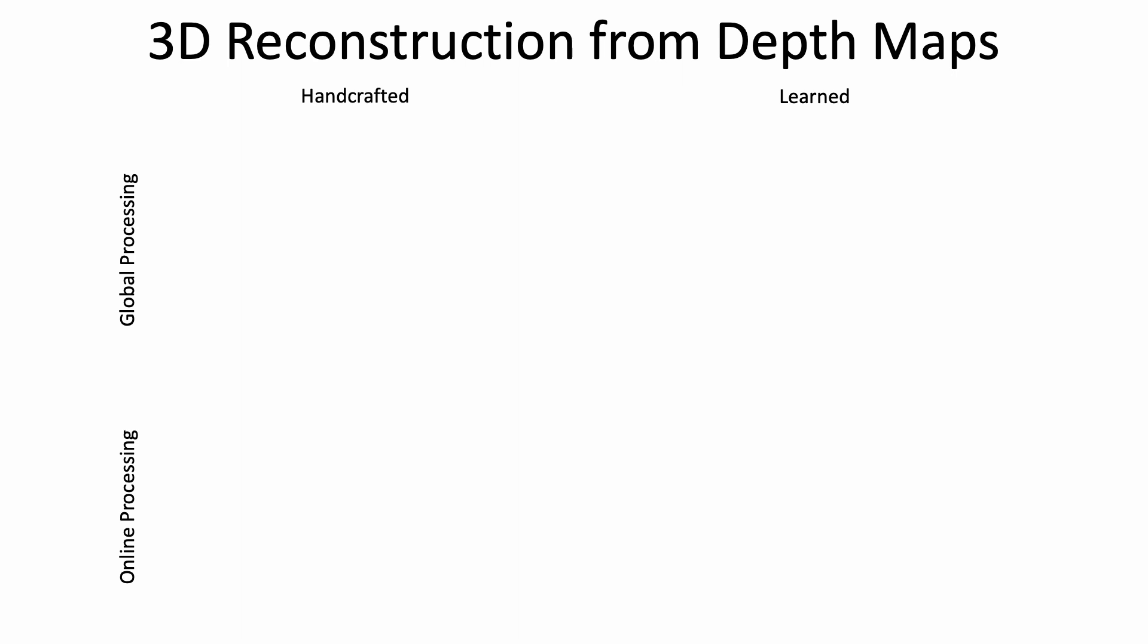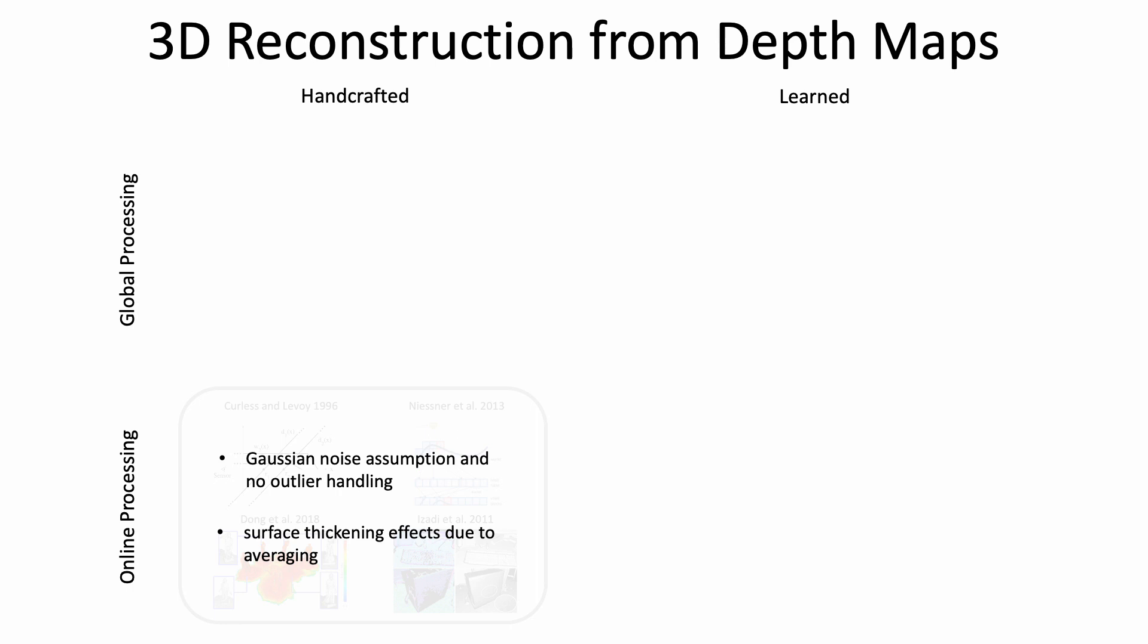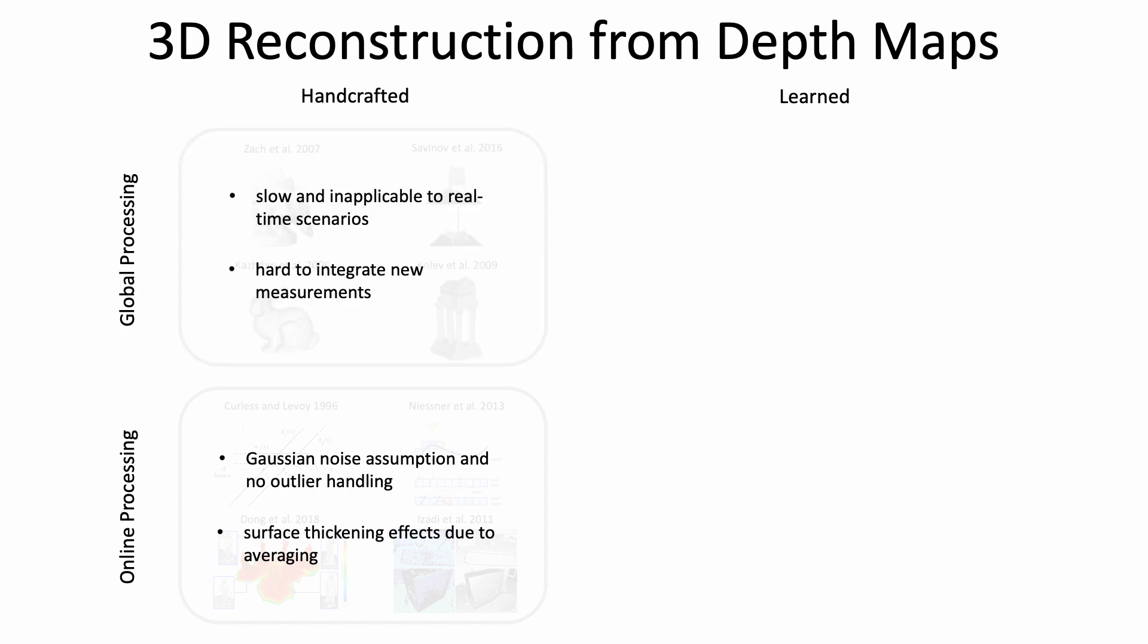We categorize approaches for 3D reconstruction from depth maps into four categories. Online handcrafted methods are the industry working horse in many applications. However, they suffer from a Gaussian noise assumption, a lack of outlier handling, as well as surface thickening effects. Global handcrafted methods can produce impressive results. Nevertheless, they are usually slow and it's hard to integrate new measurements.